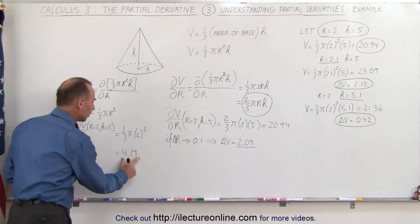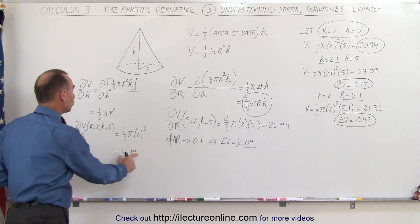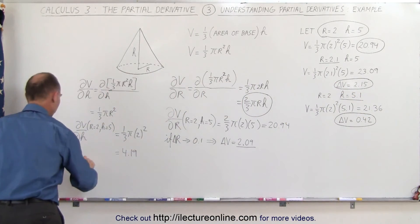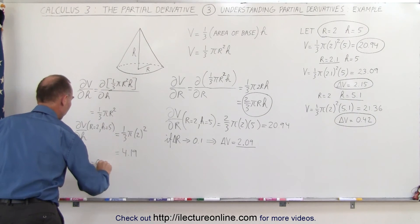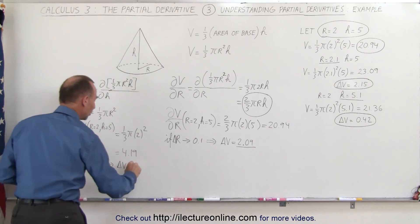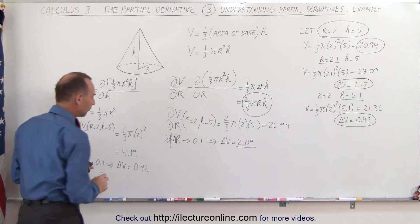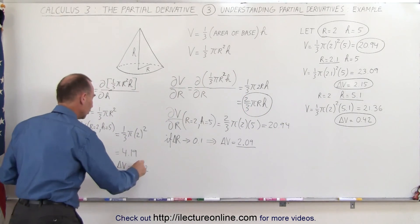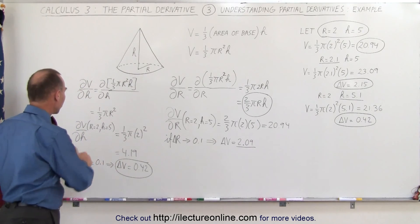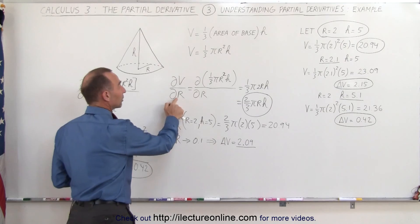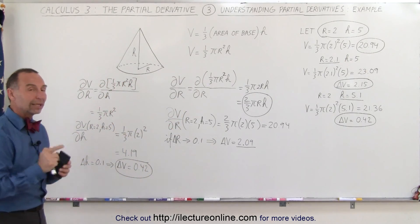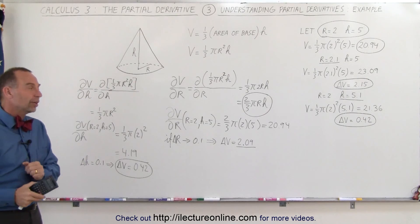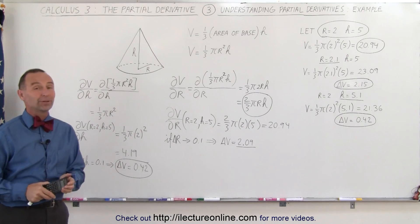This 4.19 is the change in volume when h changes by 1 unit. When h changes by 0.1 units, the change in volume is a tenth of that, which is 0.42 — exactly matching what we calculated directly. So the change in volume can be found by taking the partial derivative with respect to h or with respect to r, keeping the other variable constant each time. That's what a partial derivative means: taking the derivative with only one variable changing while all others remain constant.